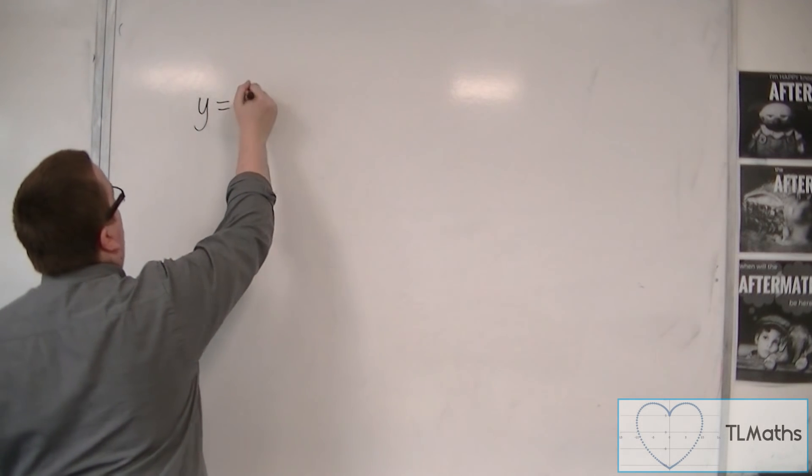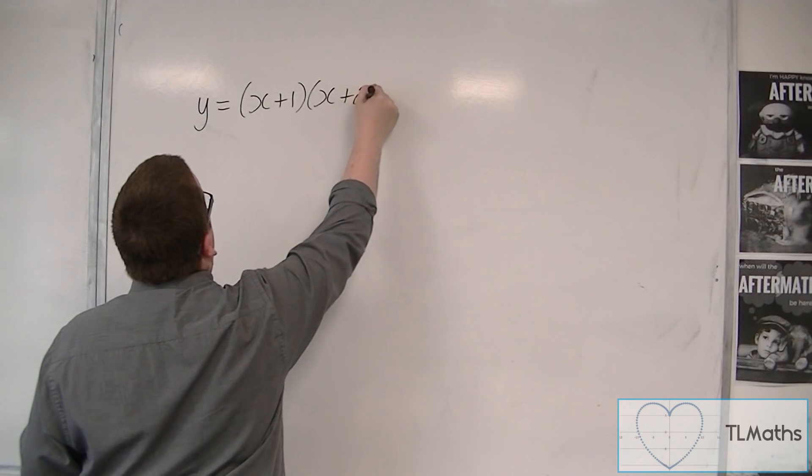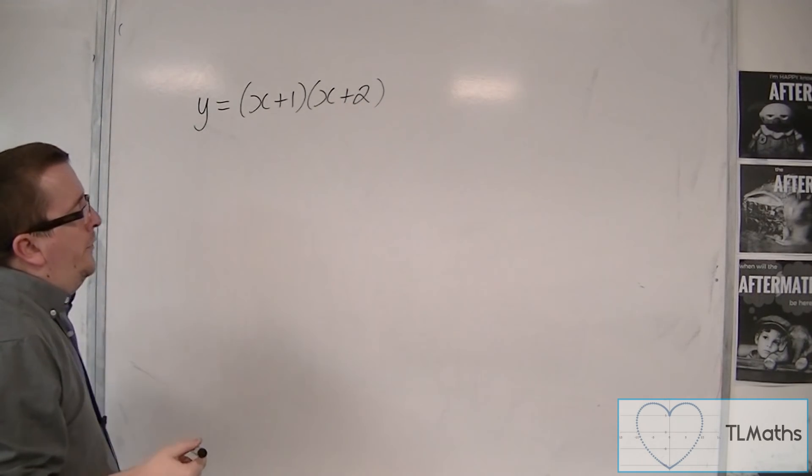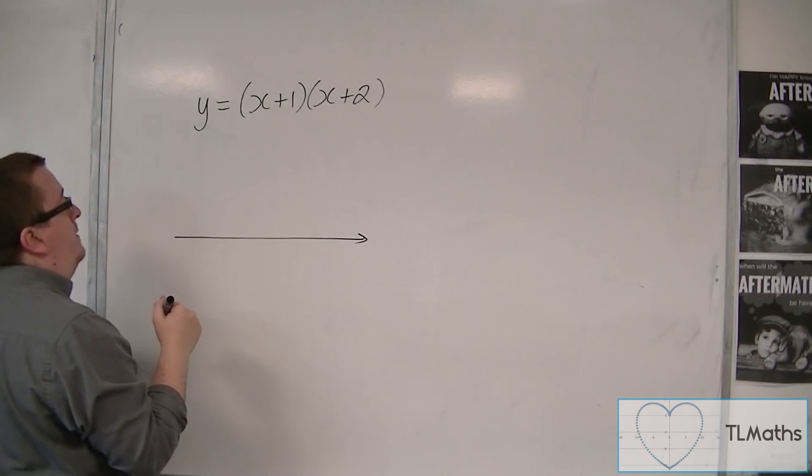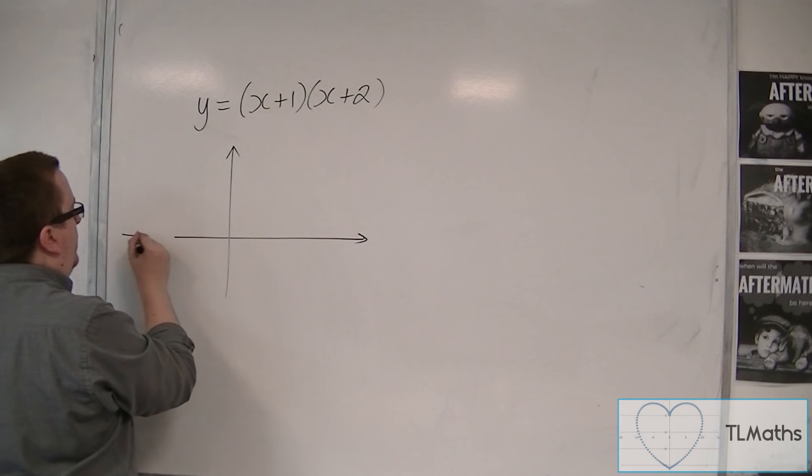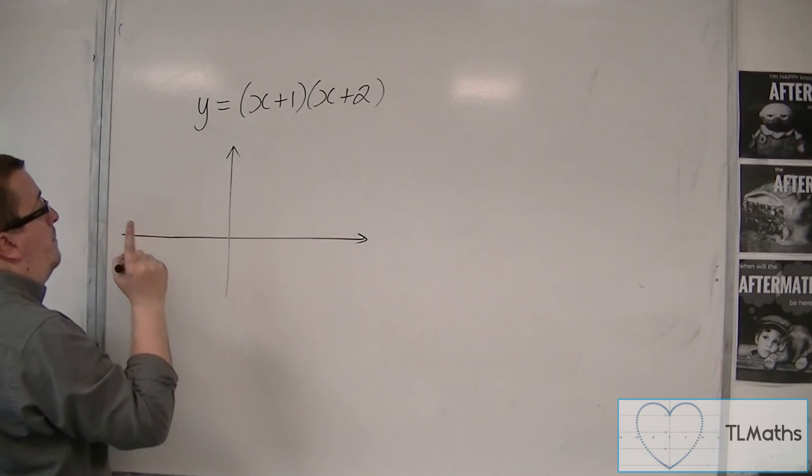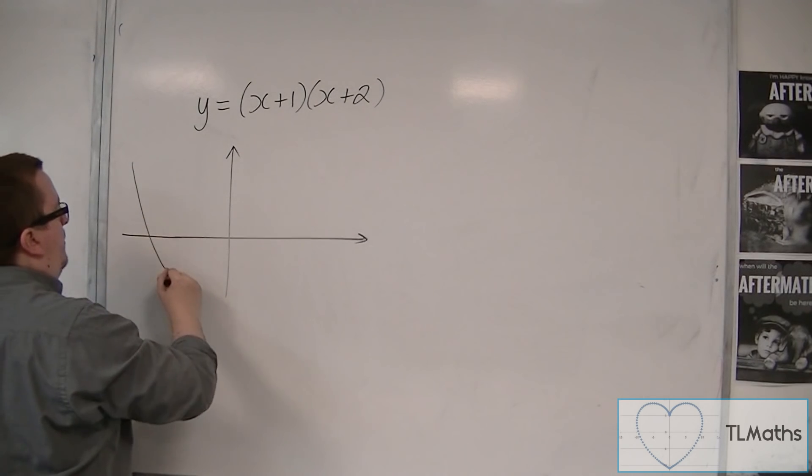Let's look at the graph of y equals (x+1)(x+2). So this curve is a parabola which is going through minus 1 and minus 2. So it looks something like this.